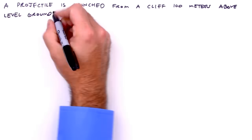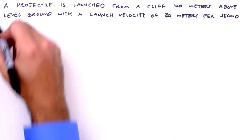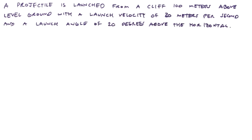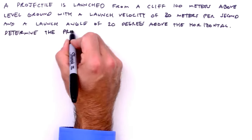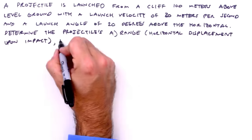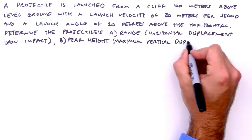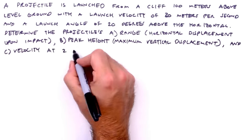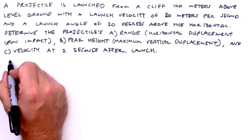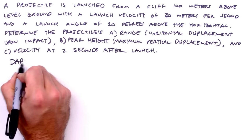For this problem, we're given the initial position and velocity of the projectile, and our task is to determine the projectile's range, peak height, and velocity at some point in time along its trajectory. The first step, as always, is to draw a picture.